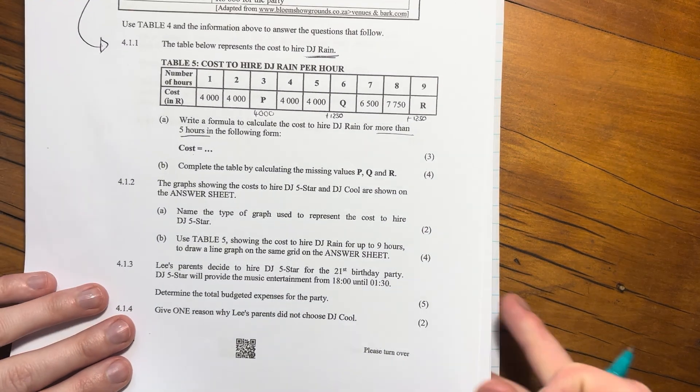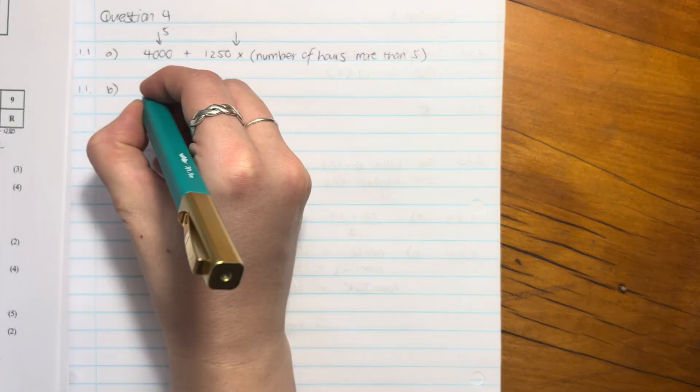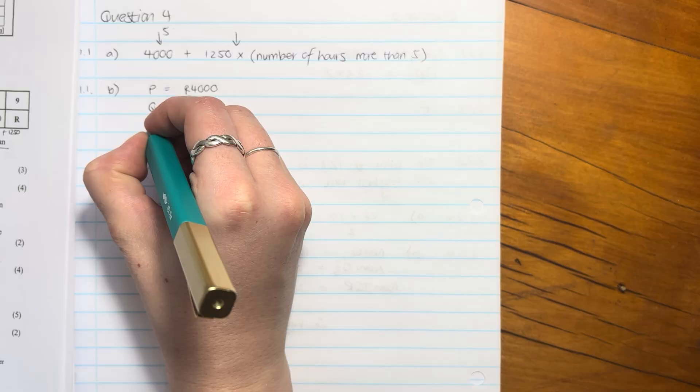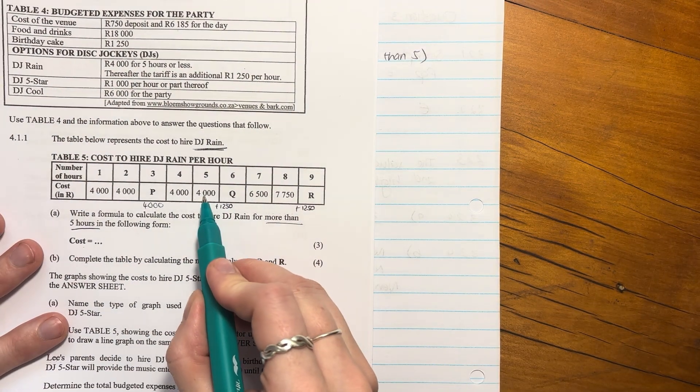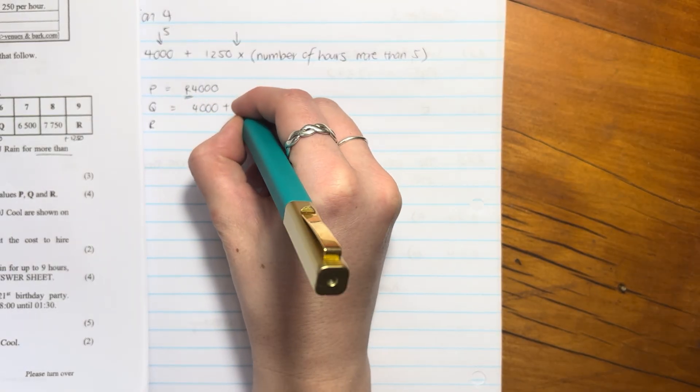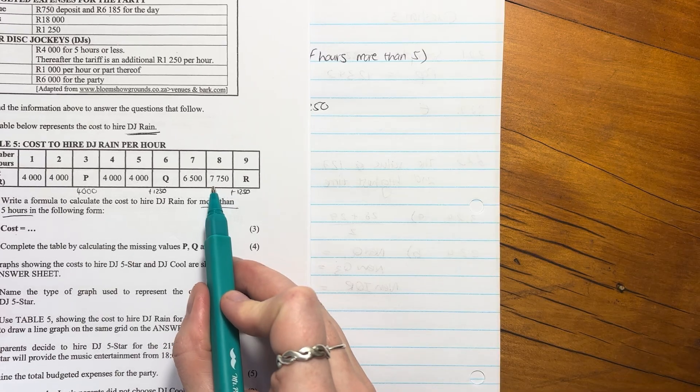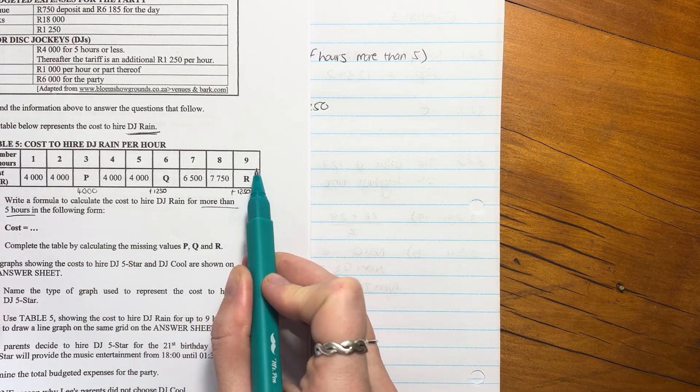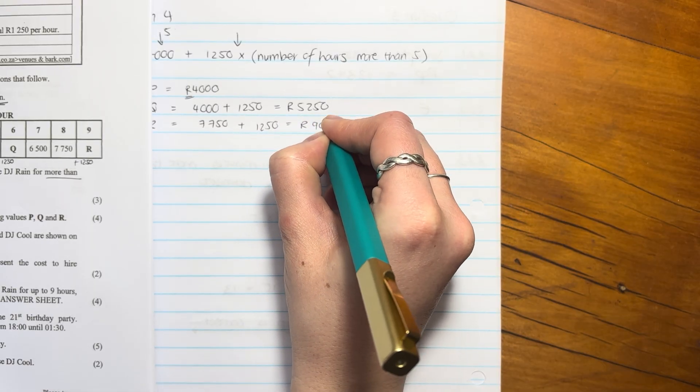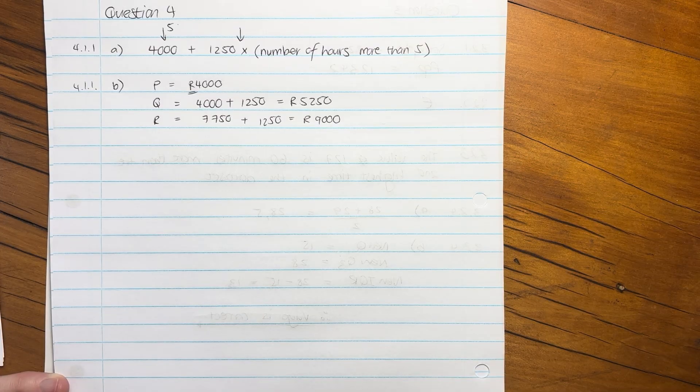Let's look at the next question. It says complete the table by calculating the missing values P, Q, and R. So we can say P would equal 4,000. Please put in your RAND value there because it is a cost. Q is going to be 4,000 plus 1,250 because Q is at my sixth hour. Then R is going to be 7,750 plus 1,250 which if I'm not mistaken is 9,000. You can put that into your calculator. So that's us done there, not too difficult but have to be quite methodical.